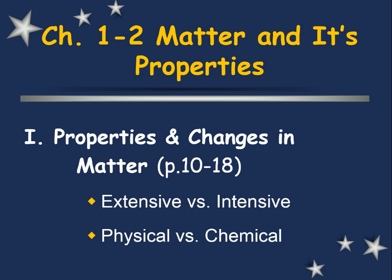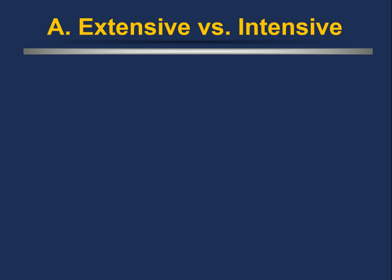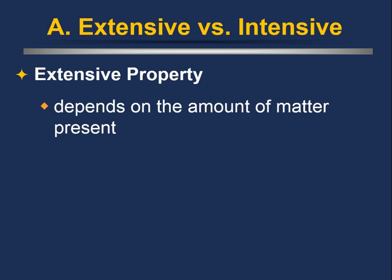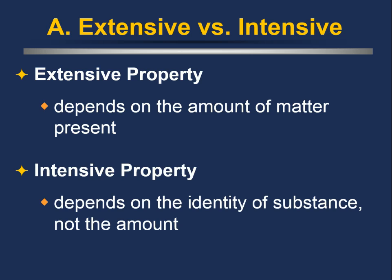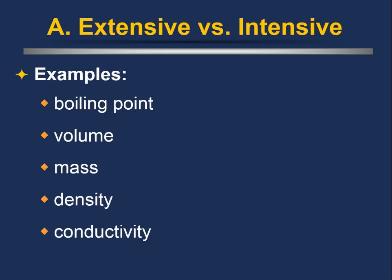We're going to start talking about properties and changes in matter. Some things we'll point out are extensive versus intensive properties, as well as chemical versus physical properties. Extensive properties depend on the amount of matter present — if you have a small amount of graphite or gold, your extensive properties will change based on how much you have. Intensive properties do not depend on the amount of matter; they depend on the identity of the substance, not the amount.